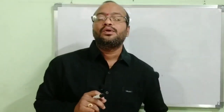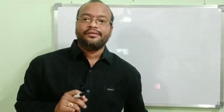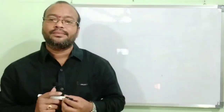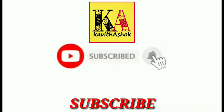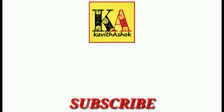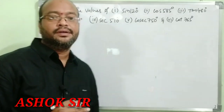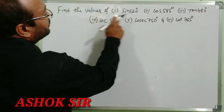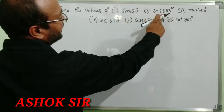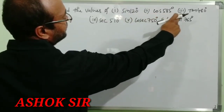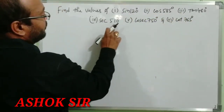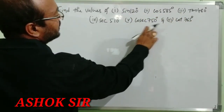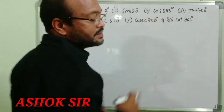Hi viewers, welcome to our channel Kavita Ashok Educational Channel for Mathematics. One problem is given here: find the values of sin 120 degrees, cos 585 degrees, tan 480 degrees, sec 510 degrees, cosec 750 degrees, and cot 765 degrees.